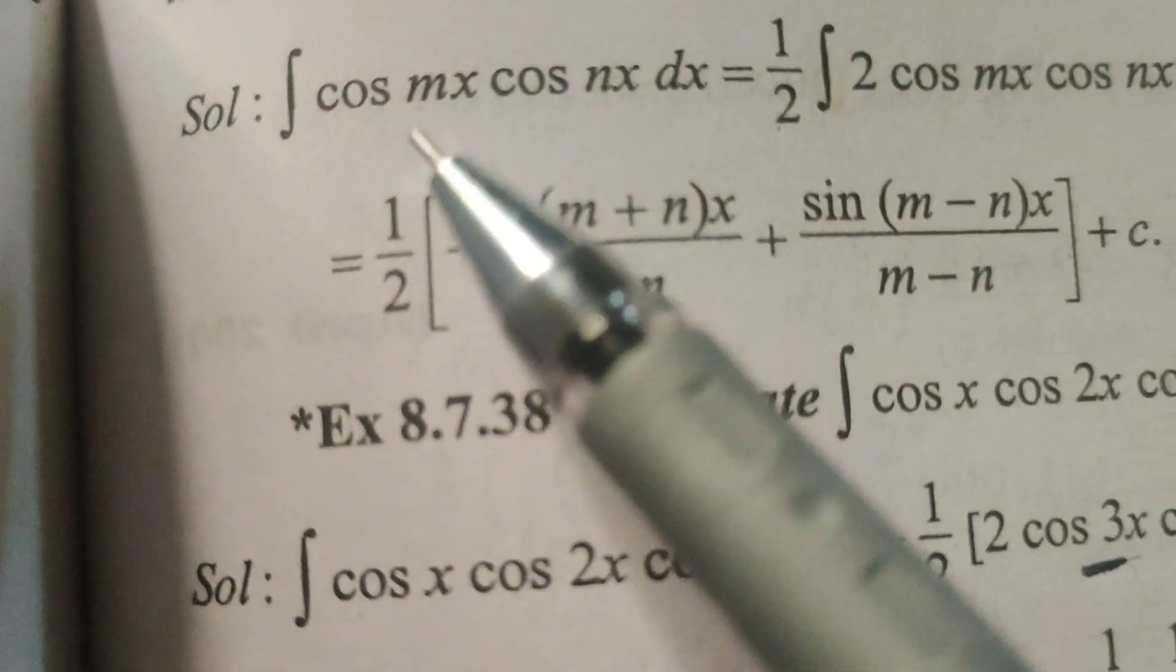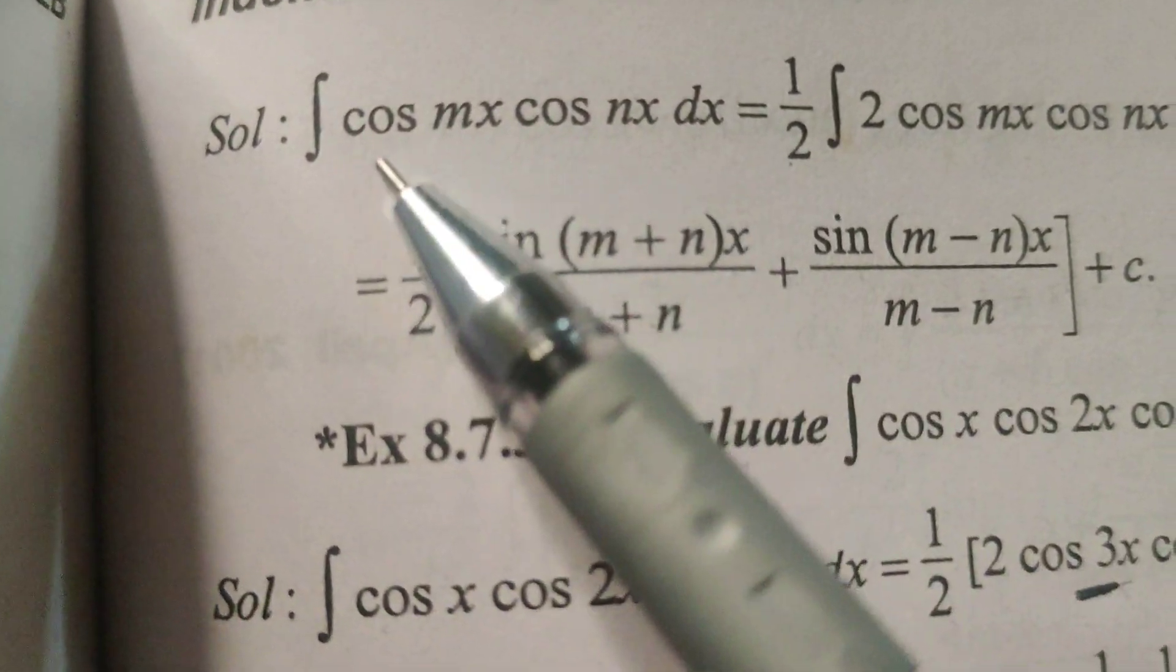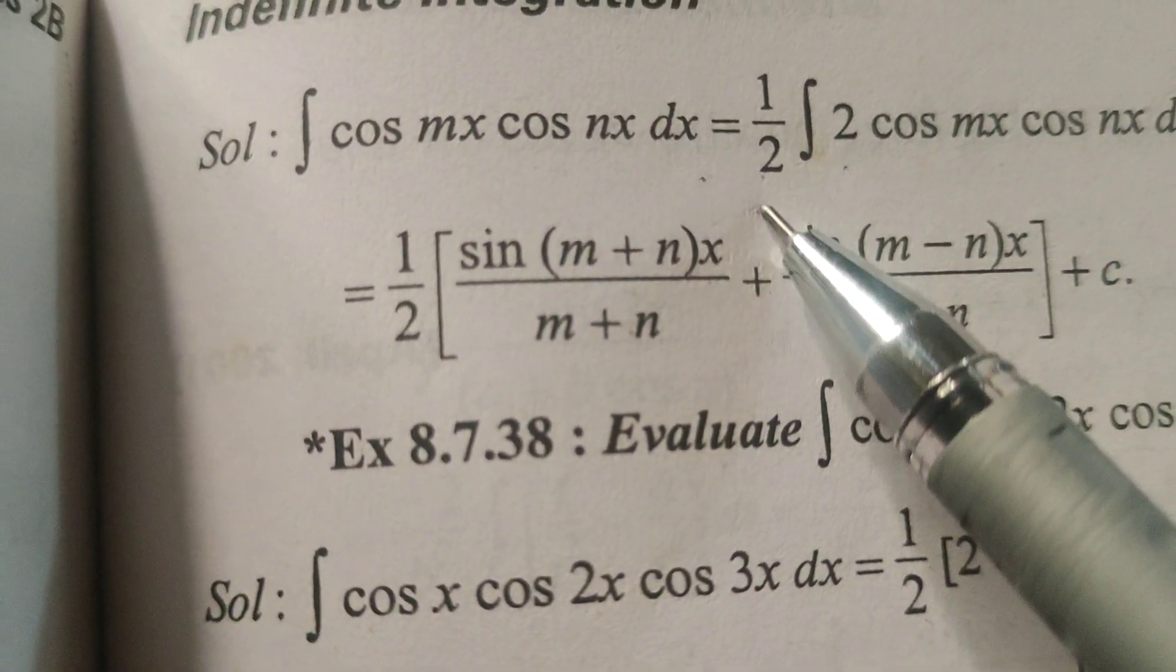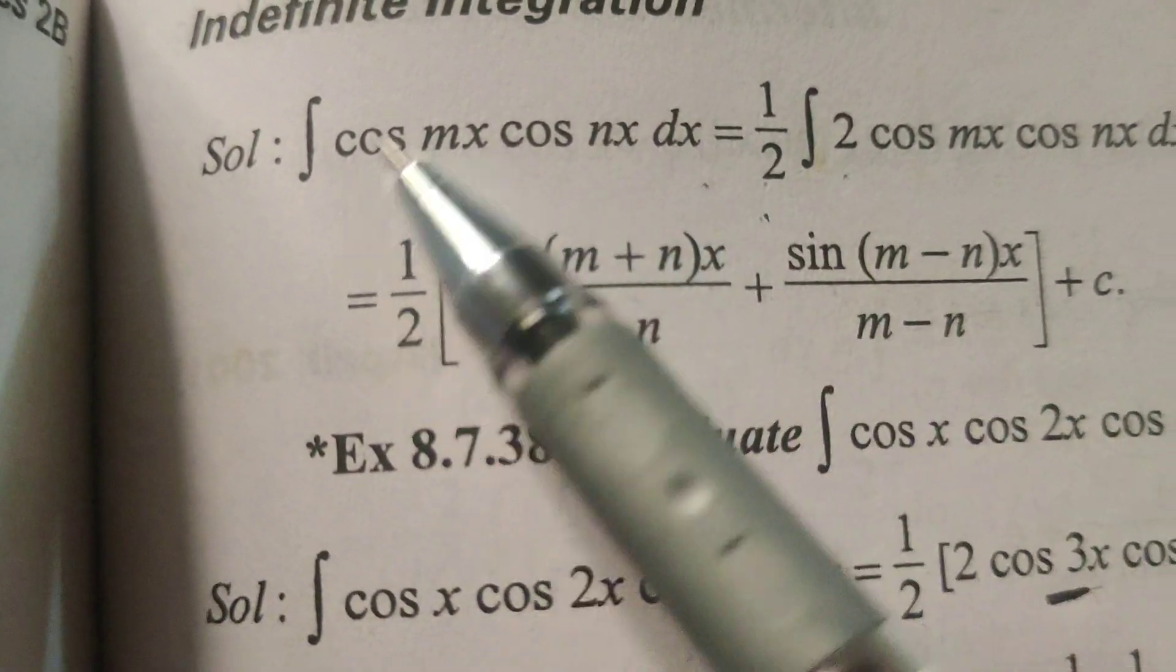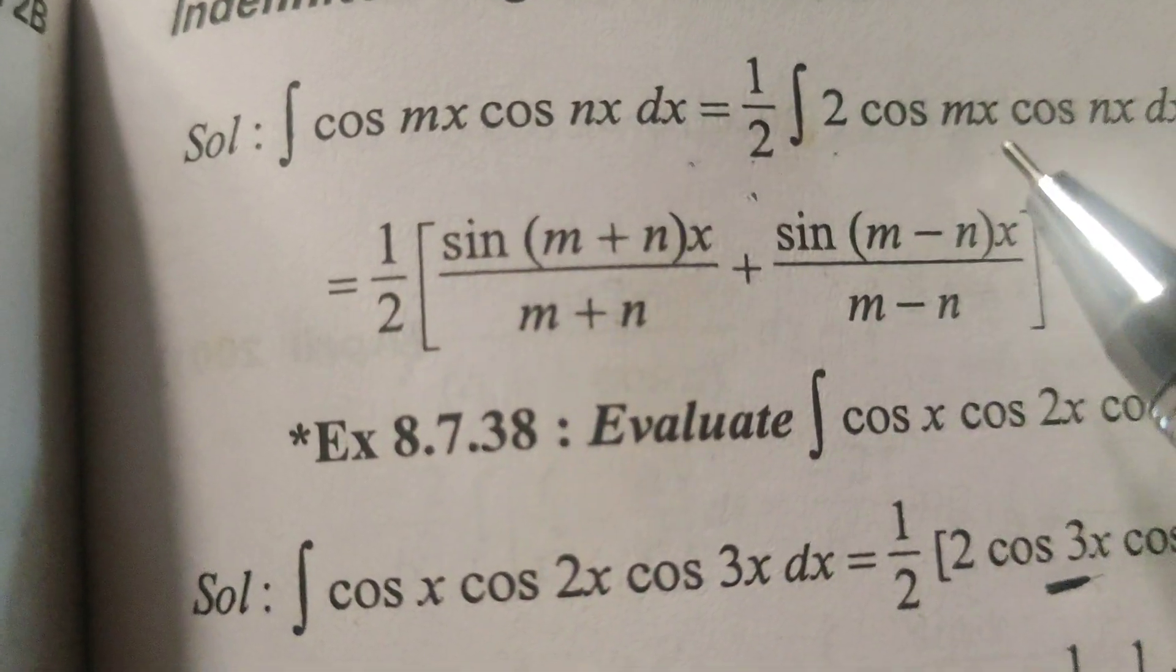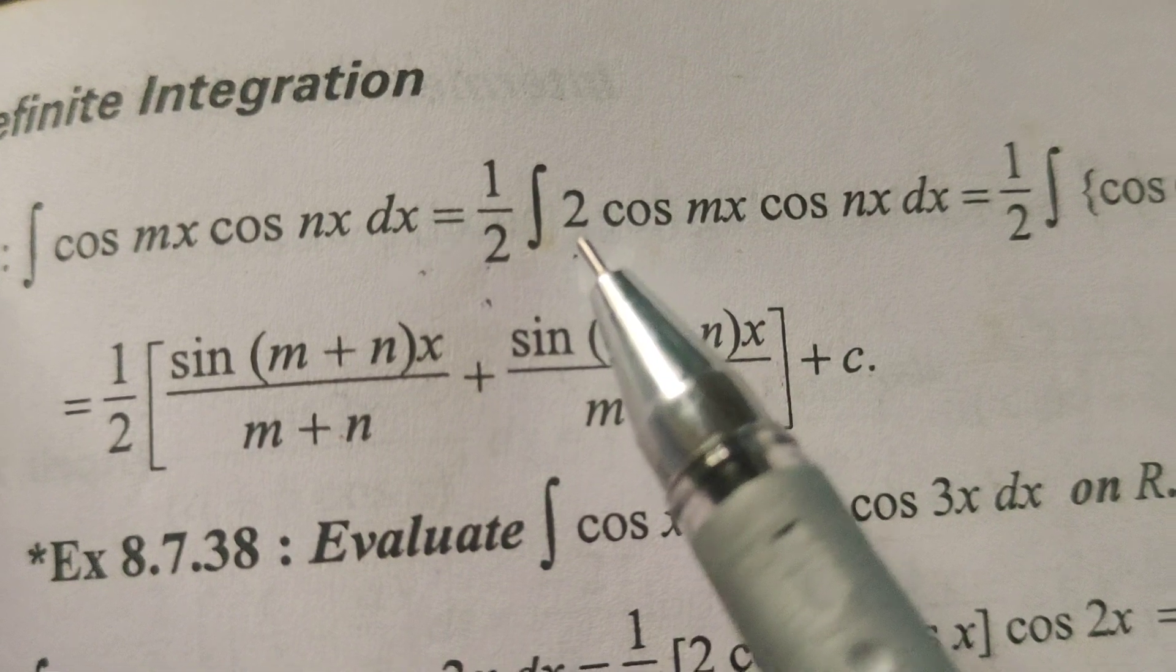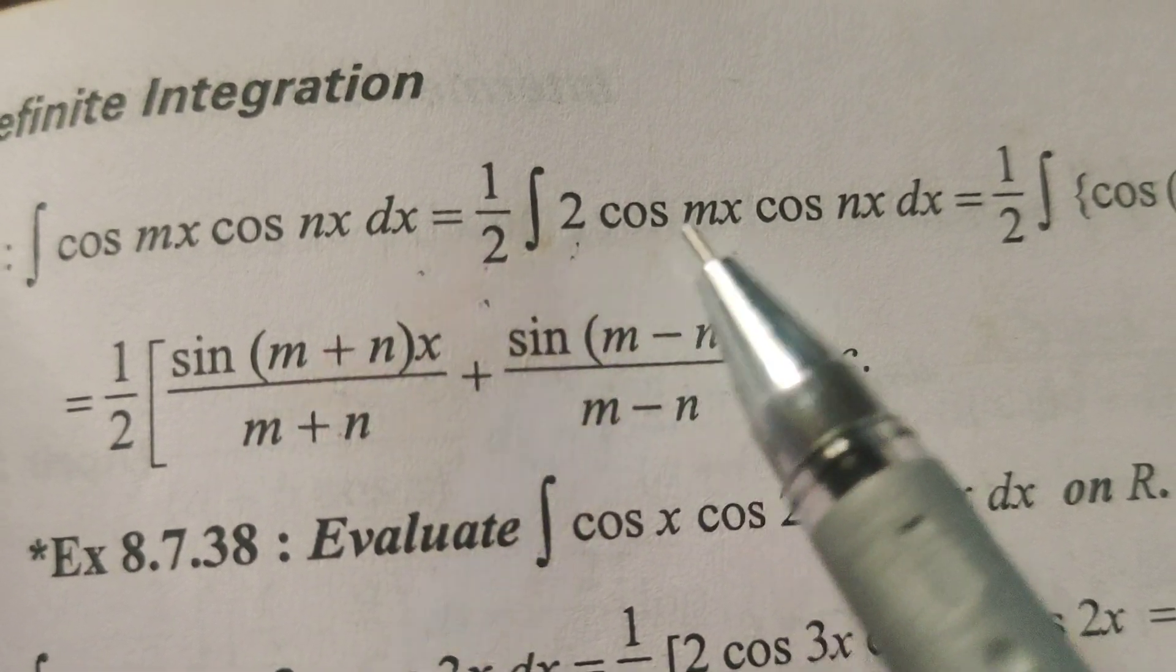Now evaluate the given integral. Write the given problem, multiplying 2 and dividing by 2 in this function of the given problem. Now here multiplying 2 into cos mx into cos nx dx.